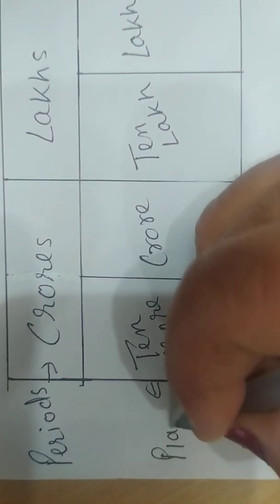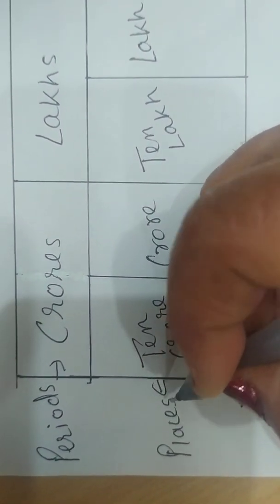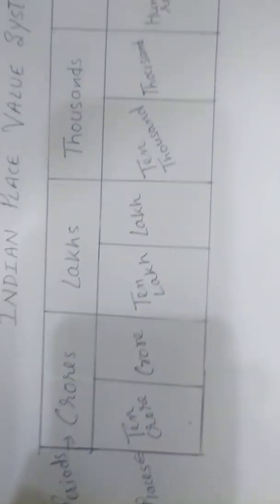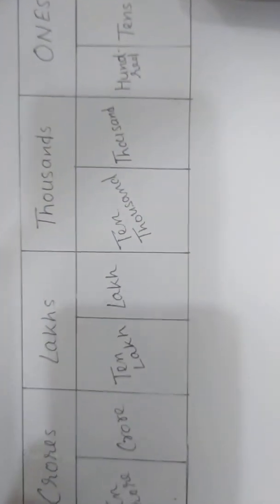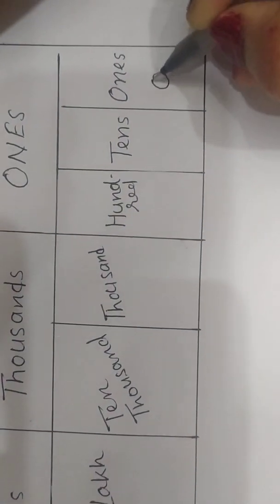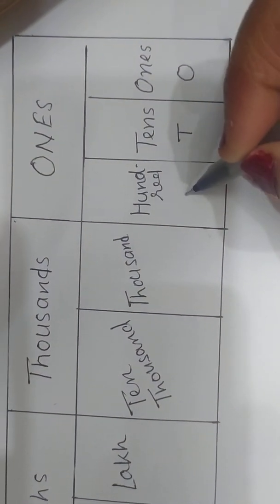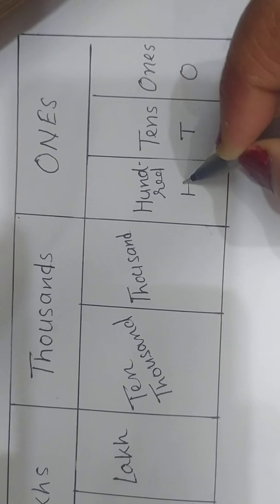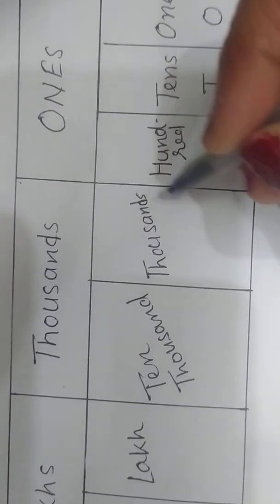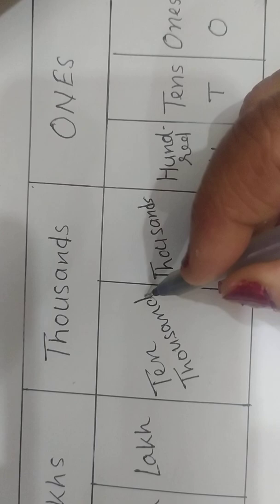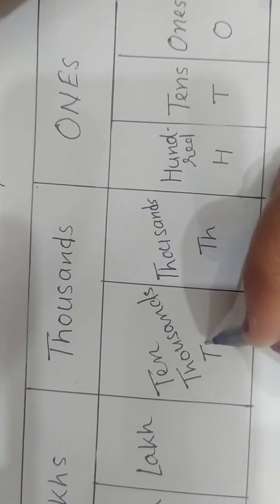Places. Short form of ones is O, tens is T, hundred is H, thousand is TH and ten thousand is TTH.